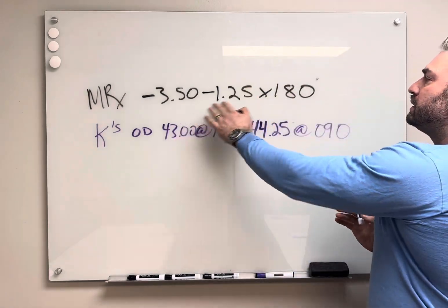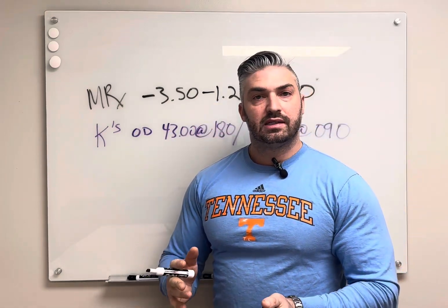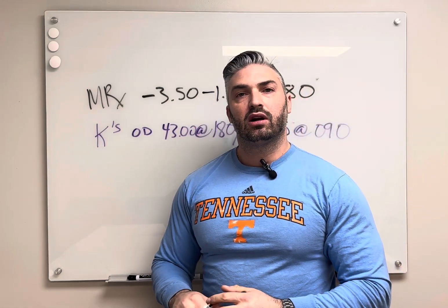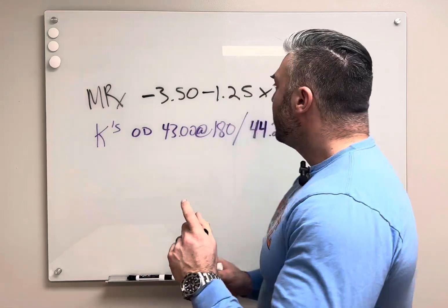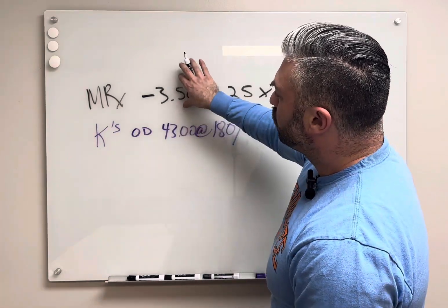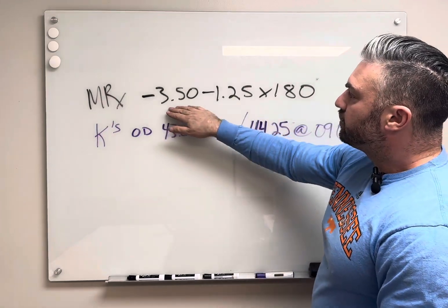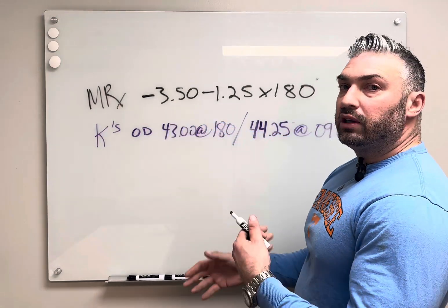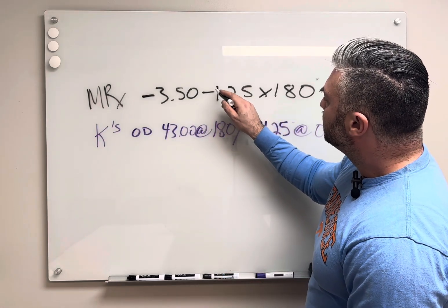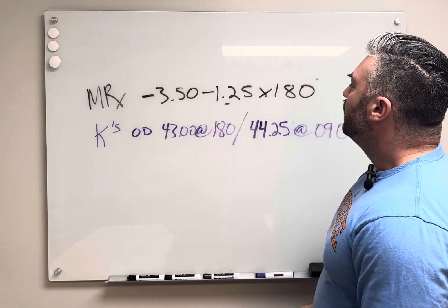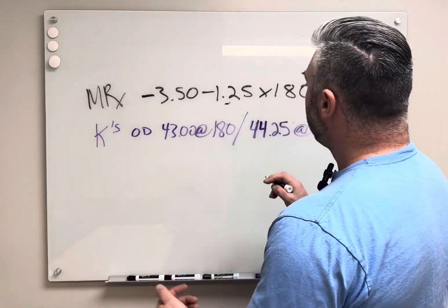So we see it's in minus cylinder form, but we talked about vertex distance. That's also something to consider. You always have to consider compensating for vertex distance if the prescription is four diopters or greater. But what's tricky with this example is the sphere power is minus 3.50, so you're led to believe I don't need to compensate. But then what we have to consider is the cylinder value. What you really need to do is compensate in both major meridians if it's necessary.